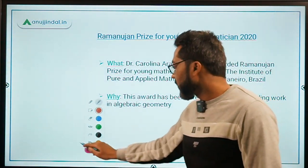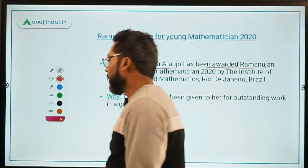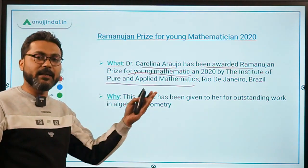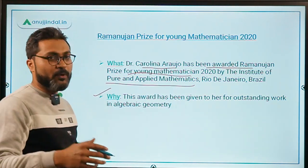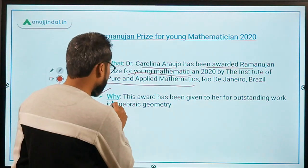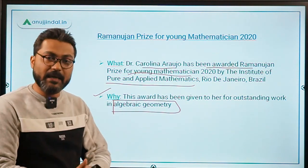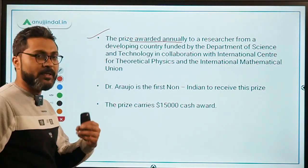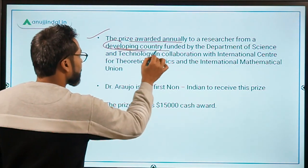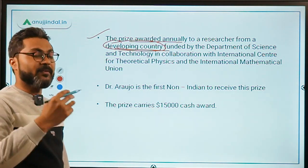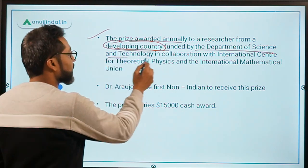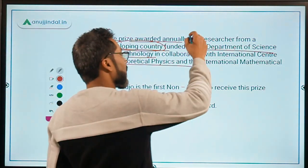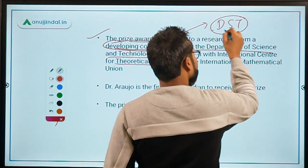Dr. Carolina Araujo has won the Ramanujan Prize for Young Mathematician 2020. This award has been given by the Institute of Pure and Applied Mathematics, which is located in Rio, Brazil, for her outstanding work in the field of Algebraic Geometry. This prize is awarded annually to a researcher from a developing country only, and it is funded by the Department of Science and Technology in collaboration with the International Center of Theoretical Physics and the International Mathematical Union.